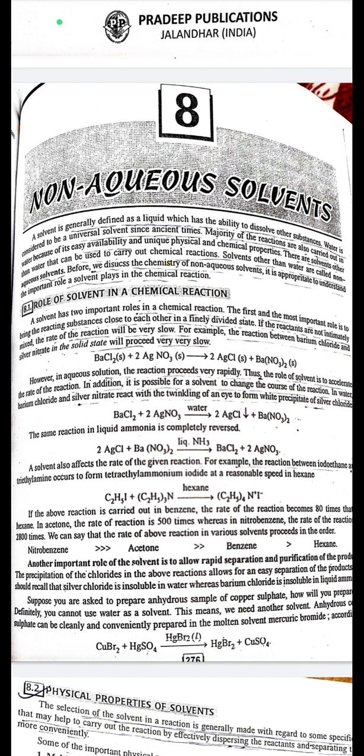A solvent also affects the rate of a given reaction. For example, the reaction between iodine and triethylamine occurs at a reasonable speed in hexane. In benzene, the rate becomes 80 times that in hexane; in acetone, 500 times; and in nitrobenzene, 2800 times. The rate of this reaction in various solvents proceeds in the order: nitrobenzene > acetone > benzene > hexane.